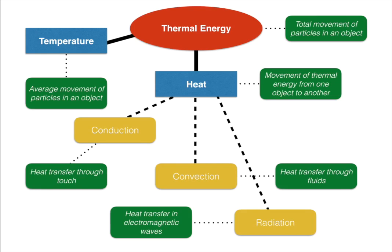To wrap up: thermal energy is the total movement of particles in an object. Temperature is the average movement of particles. When thermal energy moves from higher to lower energy levels, that movement is called heat. Heat transfer happens three ways: conduction — through touching; convection — through fluids, where particles warm up, rise, cool down, and sink; and radiation — through electromagnetic waves that can travel through a vacuum. Thanks for watching — if you have questions, let me know!